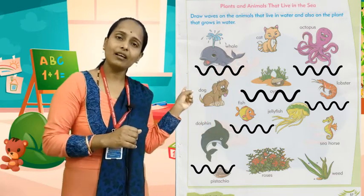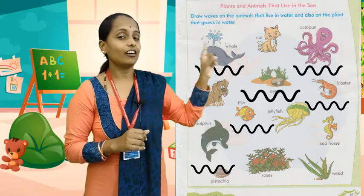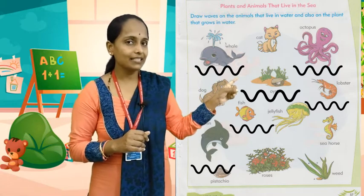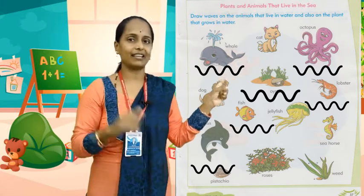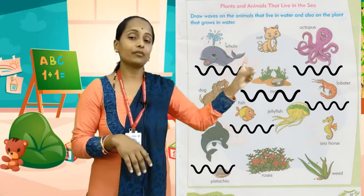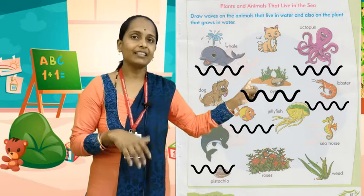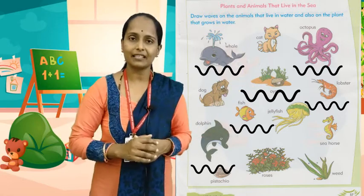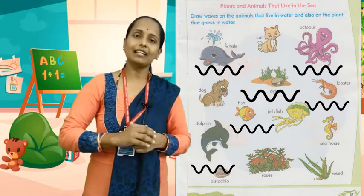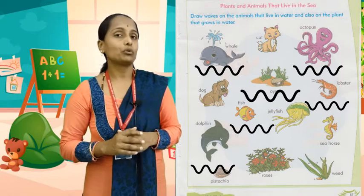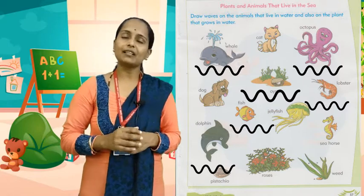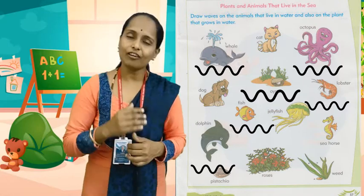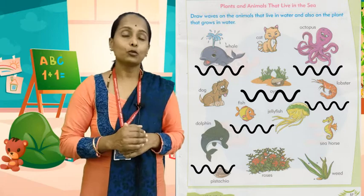And pista? No. And roses? No, they live outside. And weed? Yes. This weed — it is a plant that lives inside the sea, it stays inside the sea. So bachyo, now you know which animals and plants are in the sea. So what do you have to do? Under them, draw waves. Okay bachyo?